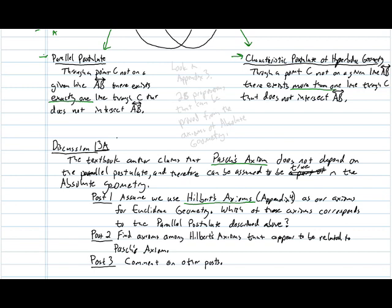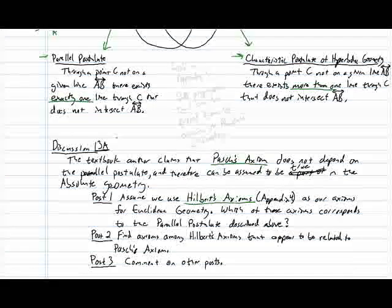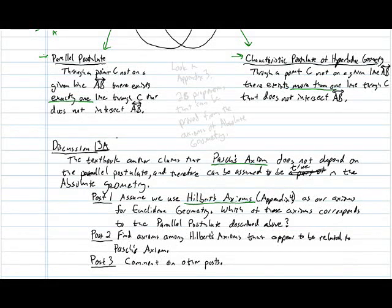Speaking of absolute geometry, there's something I intended to say earlier. Look in Appendix 3, and you'll find 28 propositions that are true of Euclidean geometry but are also true in hyperbolic geometry. These propositions can be proved from the axioms of absolute geometry.